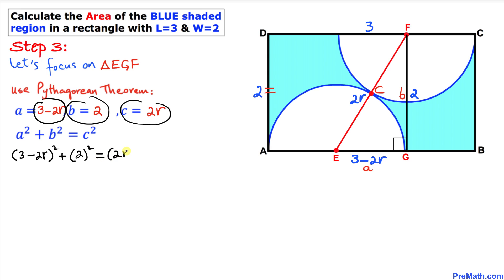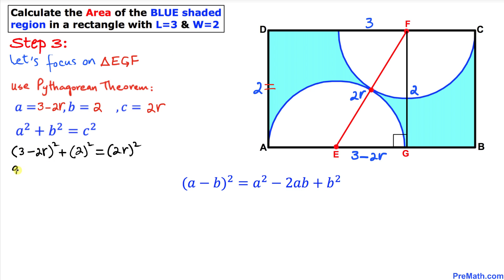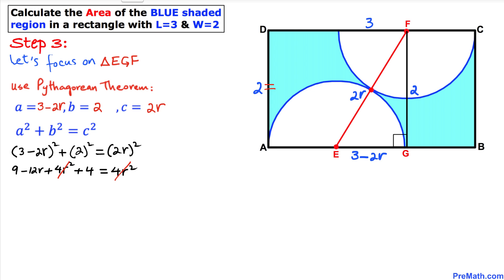Expanding the binomial using (a - b)² = a² - 2ab + b², we get 9 - 12r + 4r² + 4 = 4r². The 4r² terms cancel, leaving 13 - 12r = 0, so 12r = 13, giving us r = 13/12.